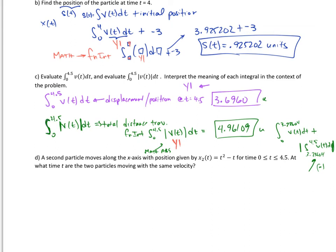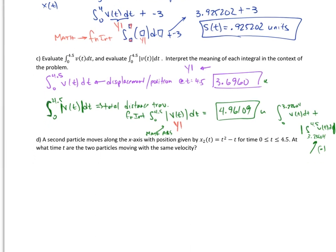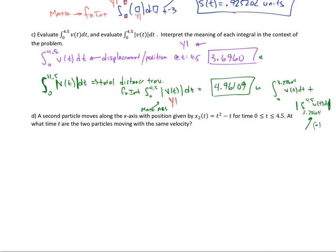Let's move on. For part D, it says a second particle moves along the x-axis with position given by x₂(t) = t² - t for that time. At what two times are the particles moving at the same velocity? We want the same velocity. That means I need to take the derivative of this. This second position derivative gives me the velocity of the second one.